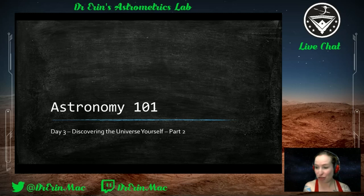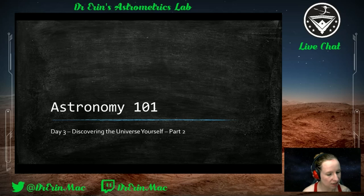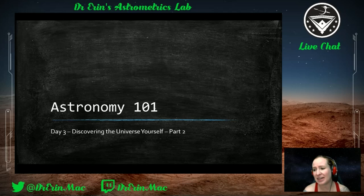Welcome to our third course in Astronomy 101: Discovering the Universe Yourself, Part Two. We did a bit of an introduction last week. The first thing I want to mention is what to look for in the sky. The moon is going to be in its first quarter tonight, and the summer triangle is also going to rise in the night sky shortly after dusk.